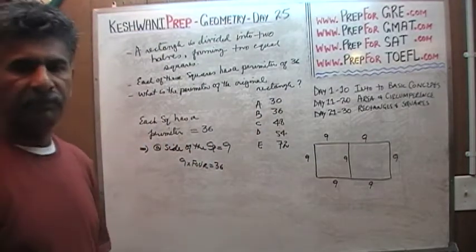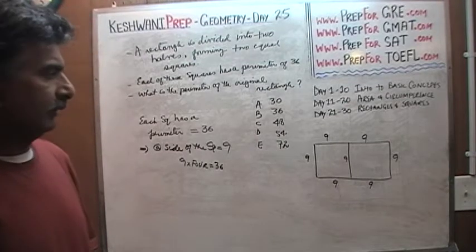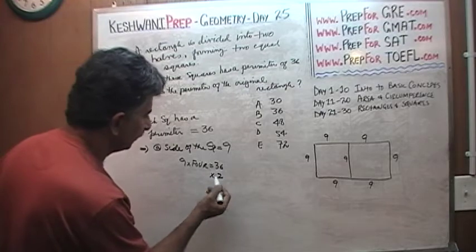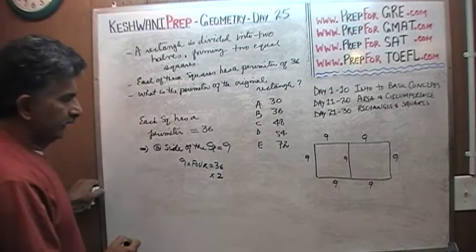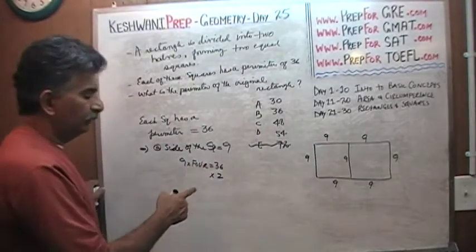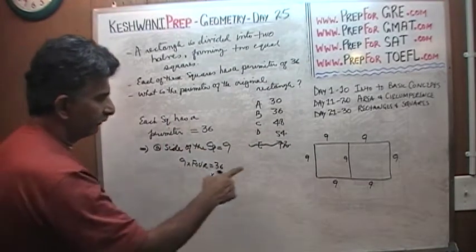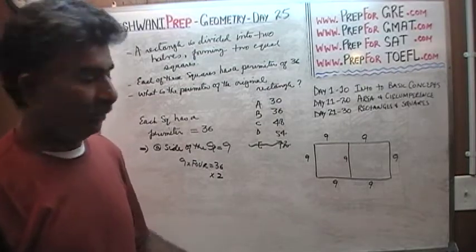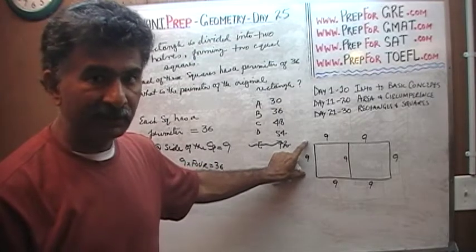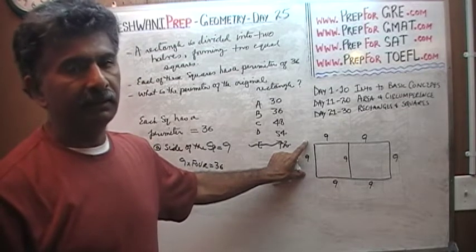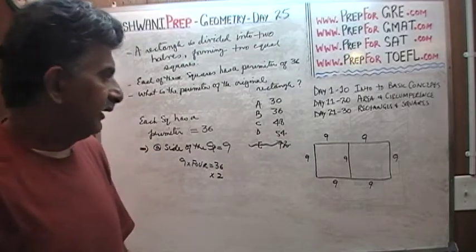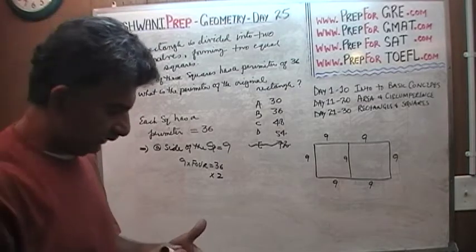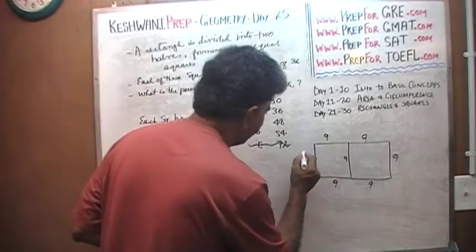The question simply is: what is the perimeter of the original rectangle? The most common mistake here would be for people to simply take 36 and multiply it by 2, coming up with 72. No, that is not correct. Because the original rectangle is not made up of 8 sides each of length 9. The perimeter of the original rectangle consists of 6 nines.